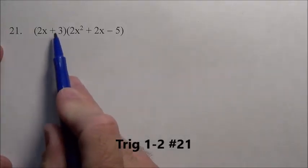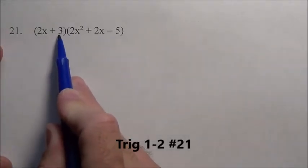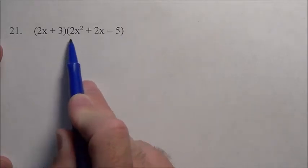Here's problem 21. We have a binomial, see it in parenthesis, 2x and 3, two pieces, times this trinomial, three pieces here.